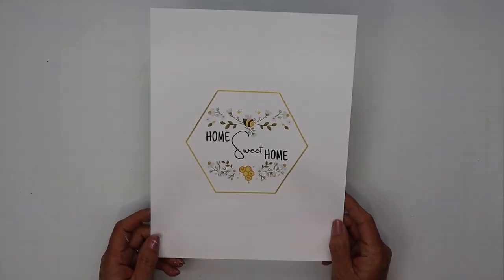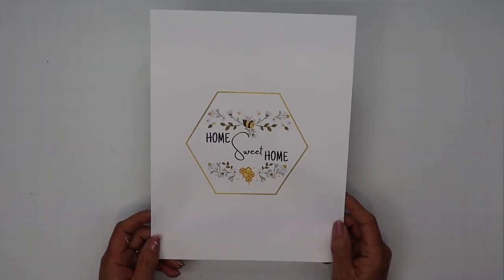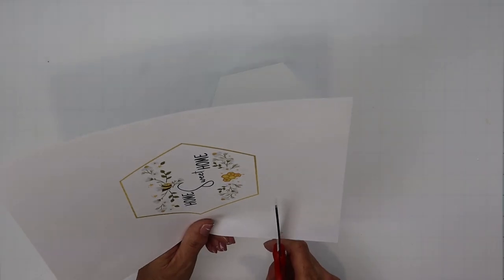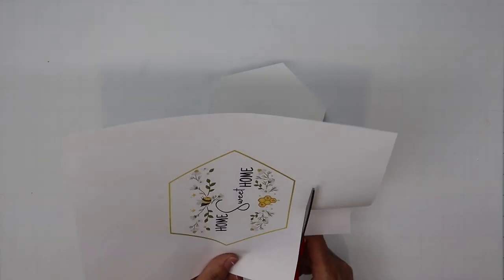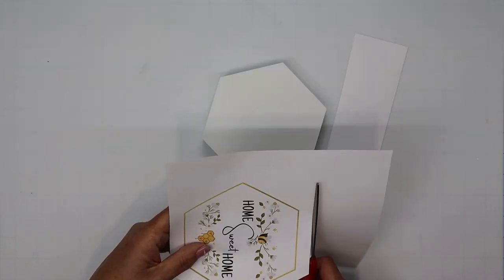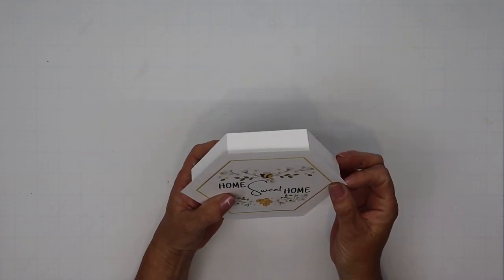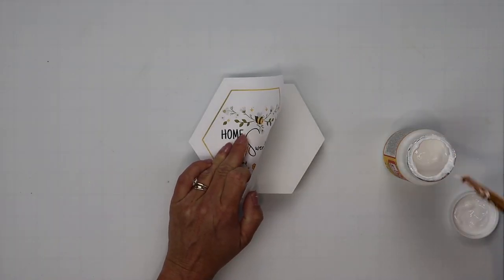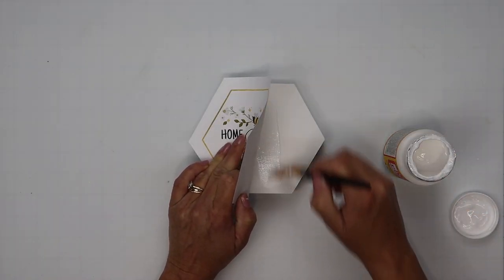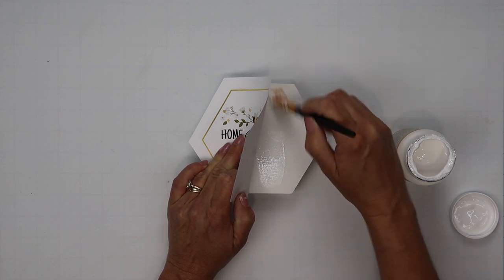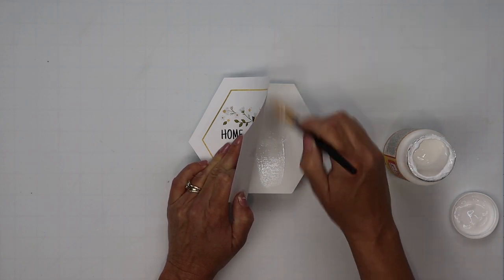Now, once it's dry, I have created this beautiful free printable, again, on my website. The link's in my description box below if you'd like to print this out and recreate this project. I'm going to cut it down, leaving some excess on the outside so I can center this up on the sign. Once I know exactly where it's going to go, I can hold it down on one side, lift the other side up, and apply a nice even coat of Mod Podge.